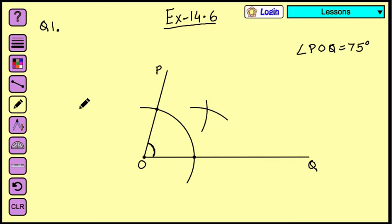Now join O and these arcs where they are cutting. Let's name it R. So this line OR is the line of symmetry, the line of symmetry of angle POQ.